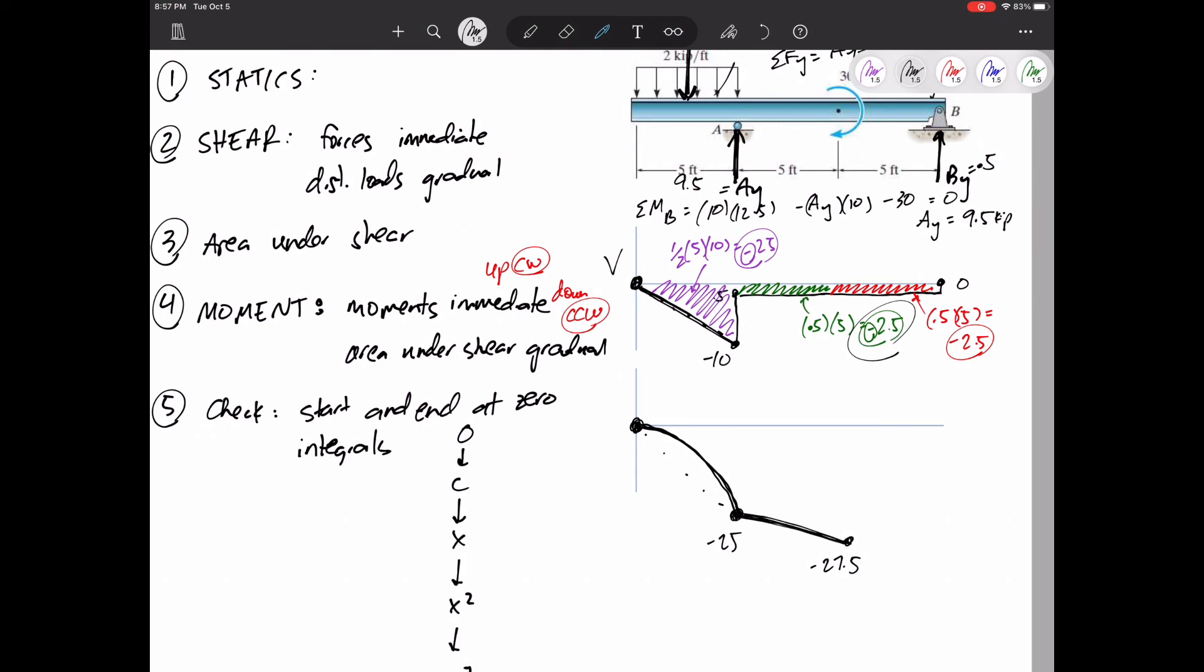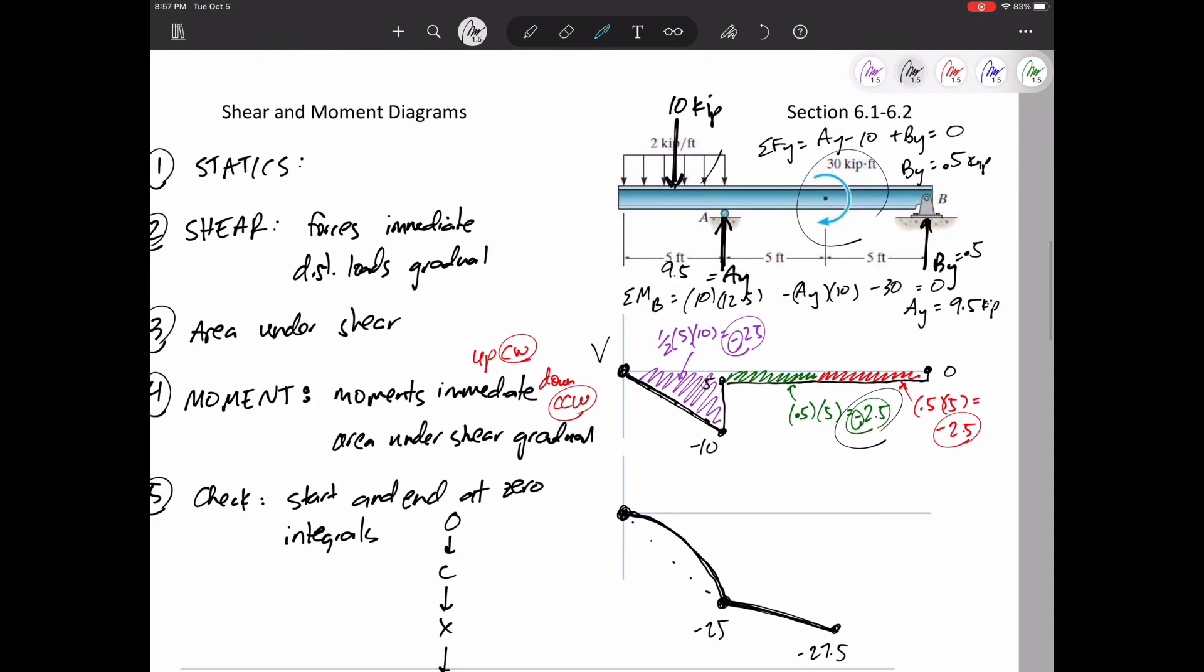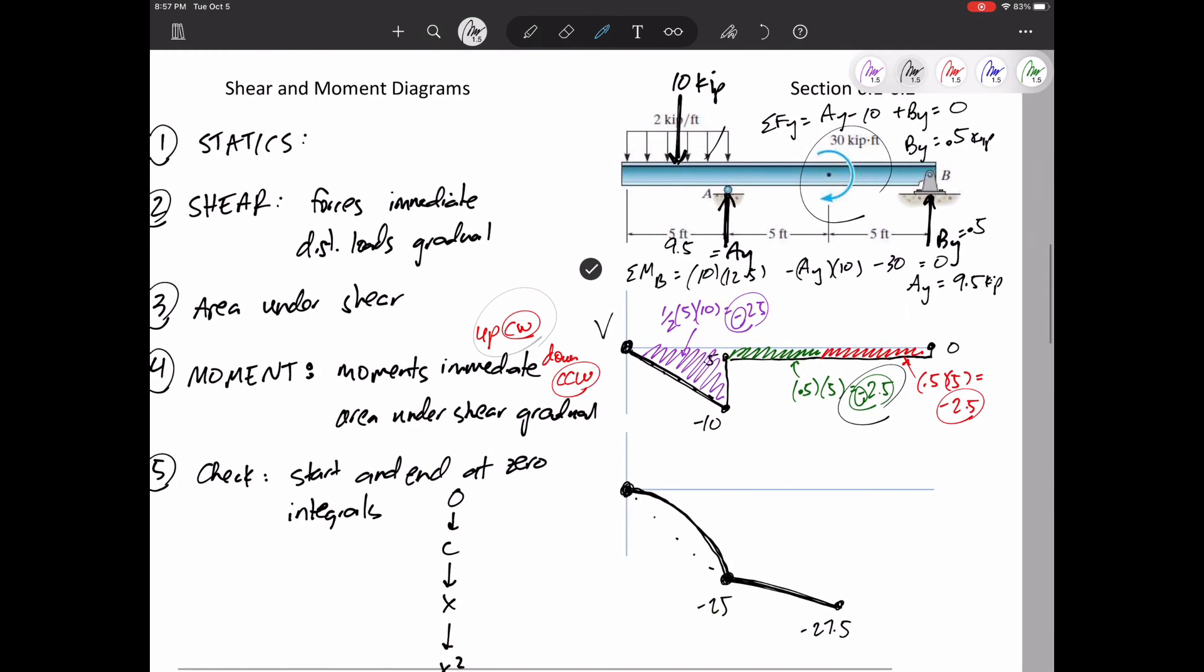Then I encounter that 30 kip-foot force. Clockwise pushes me up. So I go up 30. I was at negative 27.5. I'm going to go up to positive 2.5. All right. Positive 2.5. Then I see that red area. It's negative 2.5. It goes like that.